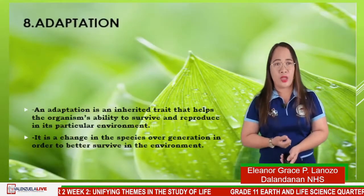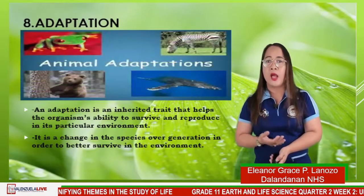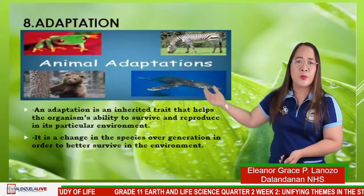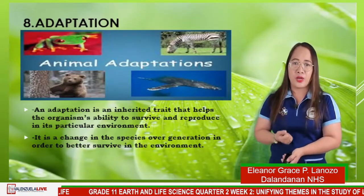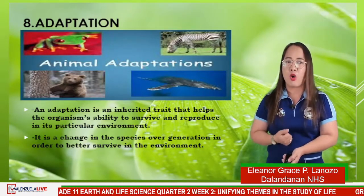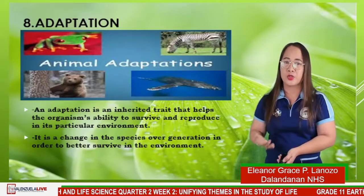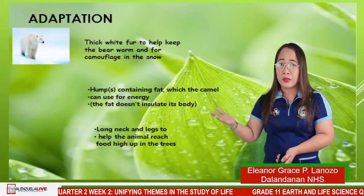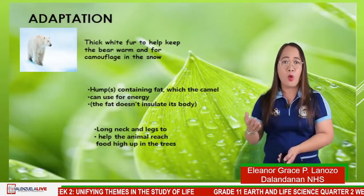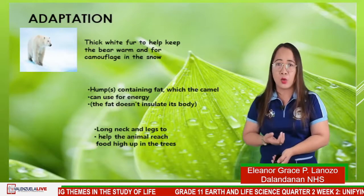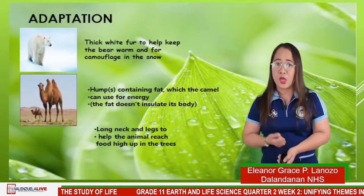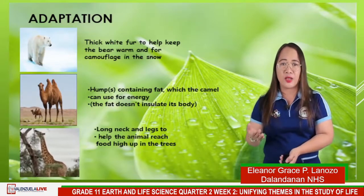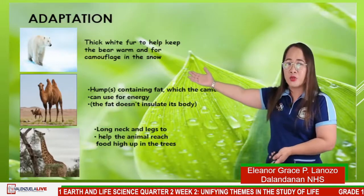We also have for number eight, adaptation. An adaptation is an inherited trait that helps an organism's ability to survive and reproduce in its particular environment. It is a change in species over generations in order to better survive in the environment. For example: polar bears have a thick white coat to keep them warm and for camouflage in the snow. Camel humps contain fats which a camel can use for energy. And the long neck and legs of the giraffe help the animal reach food high up in the trees.